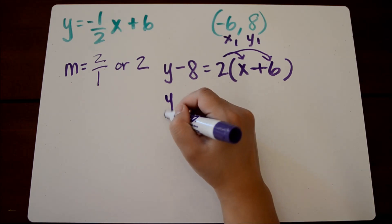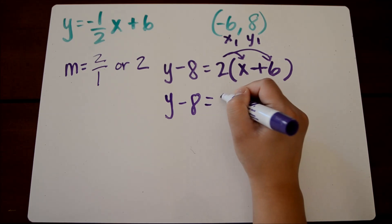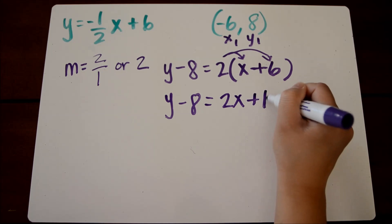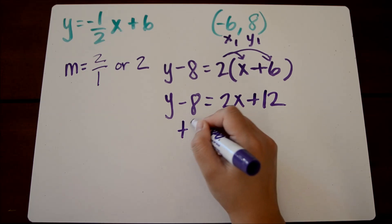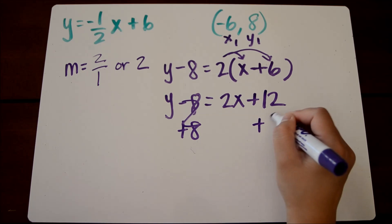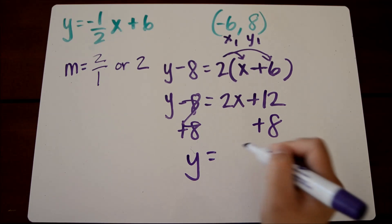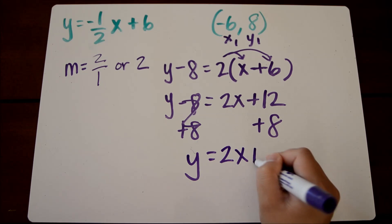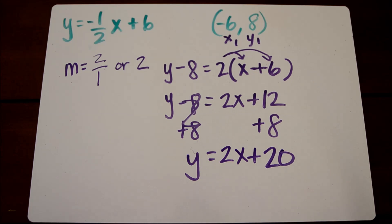Distribute the two to solve for y. We're converting this to slope-intercept form. And then we have to add eight to get rid of our constant. And we get y equals two x plus twenty. So this is our equation that is perpendicular to our original equation but also goes through the point negative six-eight.